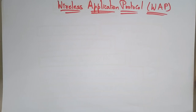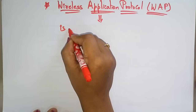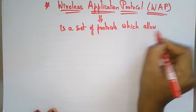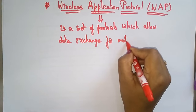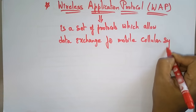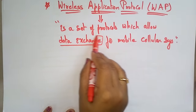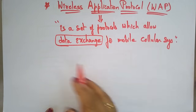Coming to the next topic, WAP — Wireless Application Protocol. This is an important concept. The wireless application protocol is a set of protocols which allows data exchange for mobile cellular systems. If you want to transfer data from one device to another device, the set of protocols which allows that data exchange is the Wireless Application Protocol.